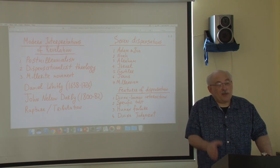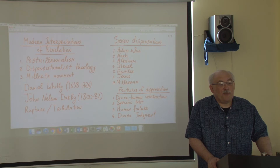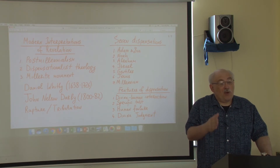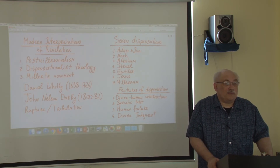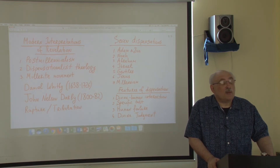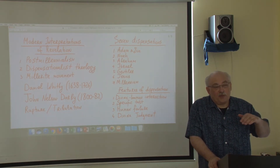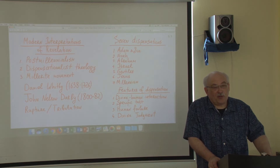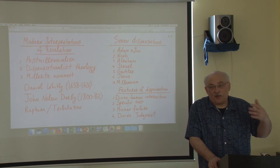People can either pass the test or fail. The third feature of each dispensation, according to Darby, is that humans always fail — as one student noted, he's not wrong; people tend to fall short. And the fourth necessary feature is that God punishes humans for their failure. So Darby thought that if you read the Bible, you see it is organized according to this repeating pattern of dispensations.